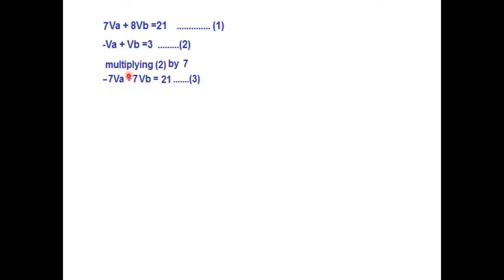And now if we compare these two, adding 1 and 2, we get 15VB equals 42. Or VB equals 2.8V.